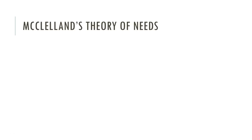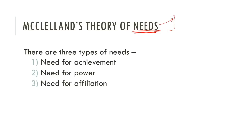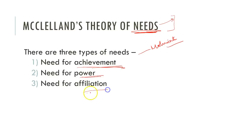McClelland's three-needs theory is again a theory which is based on needs — similar to Maslow, which was also based on needs. Let us see how it was different from Maslow. Basically, McClelland said that there are three types of needs which create motivation: one is need for achievement, second is need for power, and third is need for affiliation. These are the three needs which lead to motivation. Let us take up each one by one.